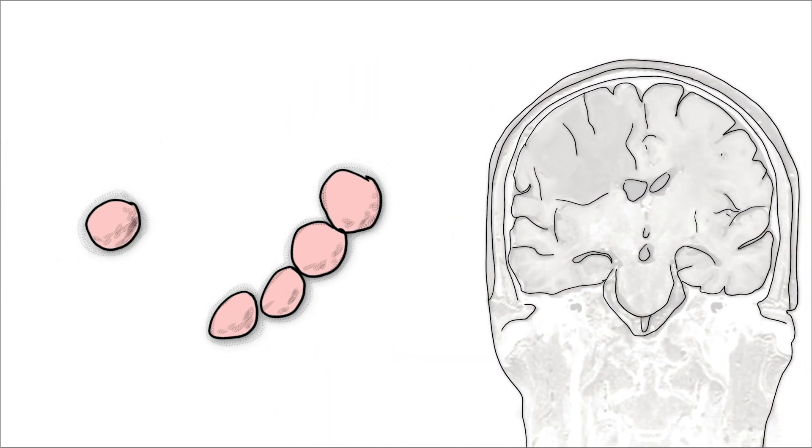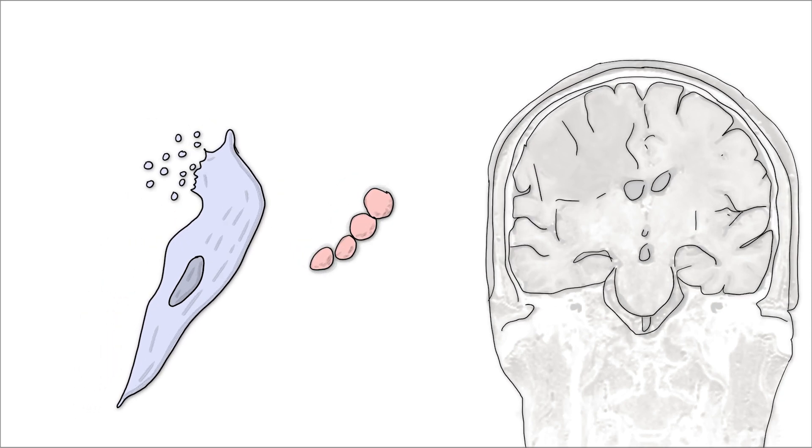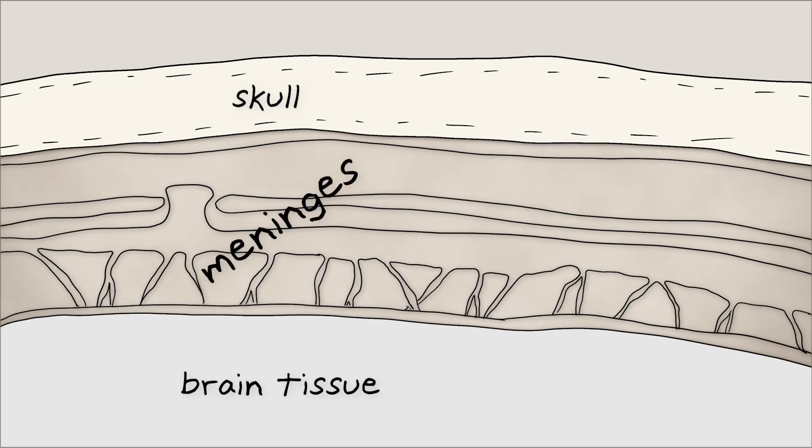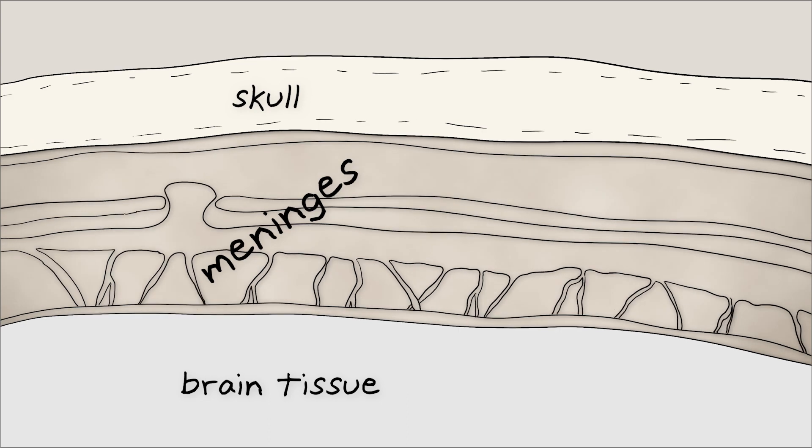Typically, when bacteria enter the body, immune defenses spring into action to disarm the invaders. The brain's protective layers, called meninges, shield the brain from injury and infection.